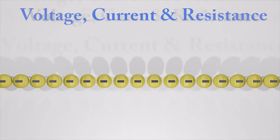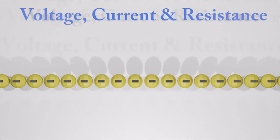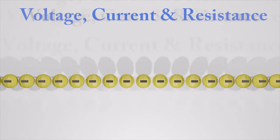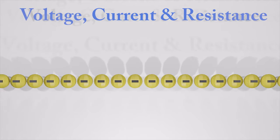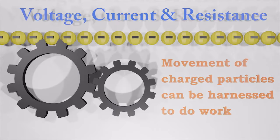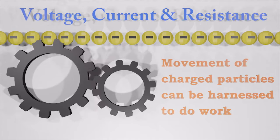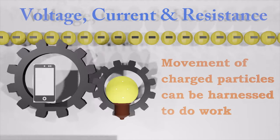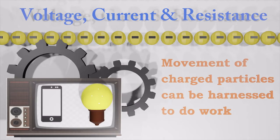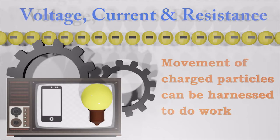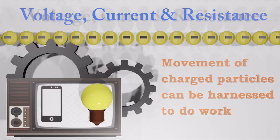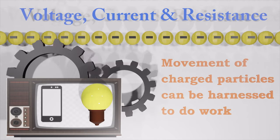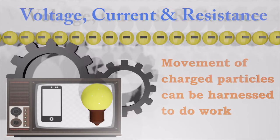Electricity is the movement of electrons. Electrons are charged particles, and the movement of these charged particles can be harnessed to do work. Your light bulb, your mobile phone, your TV, your computer — all are harnessing the movement of electrons in order to do work. They all operate using the same basic power source: the movement of electrons.